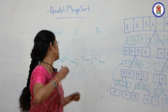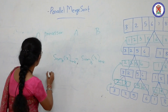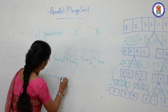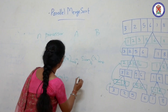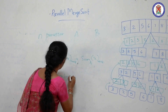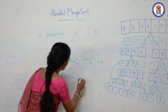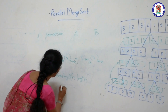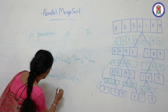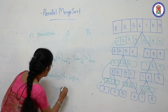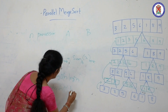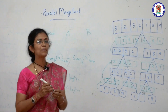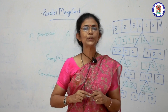This is how the parallel version gets complicated. The work complexity is O(n log² n) — that is log squared of n times n. The depth complexity is O(log n), because we make heavy use of parallel processes.